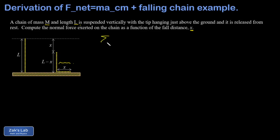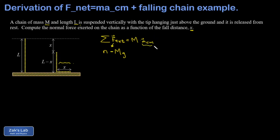The plan is to apply our new formula: the sum of all external forces on an extended body equals total mass times center of mass acceleration. Working in one dimension with upward positive and downward negative, the net external force on the chain is the normal force pointing up minus the gravitational force on the entire chain, Mg. If we can find the center of mass acceleration, we can add Mg to both sides and solve for the normal force.